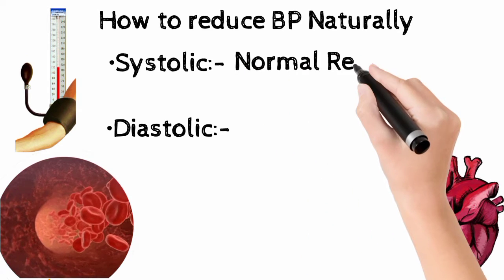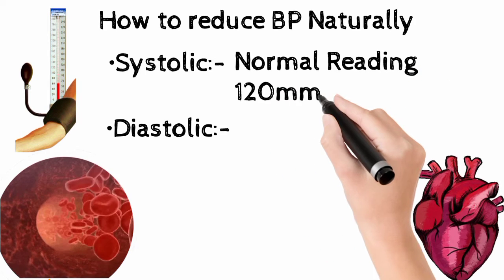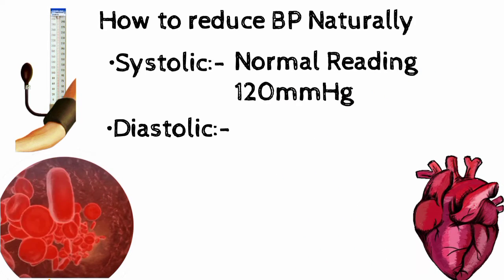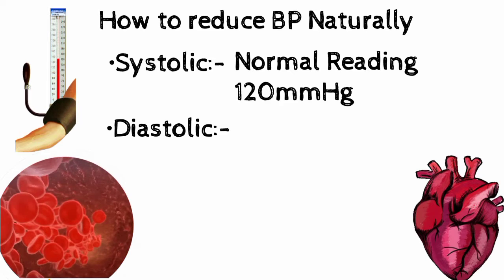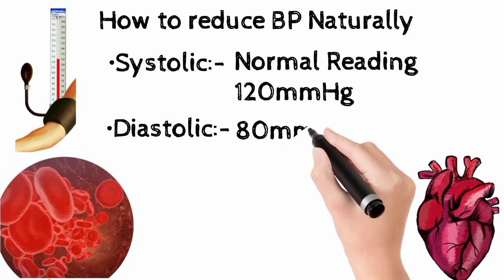Normal range for systolic blood pressure is 120 mm of Hg and that of diastolic is 80 mm of Hg.